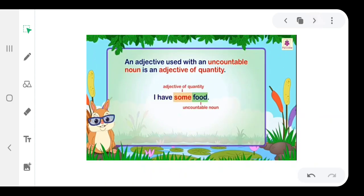Remember the following rules with such words. An adjective used with an uncountable noun is an adjective of quantity. For example, I have some food. Some is an adjective of quantity. Food is an uncountable noun.